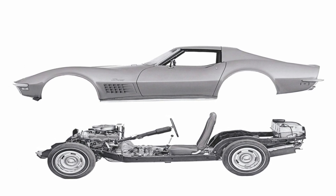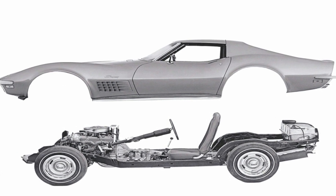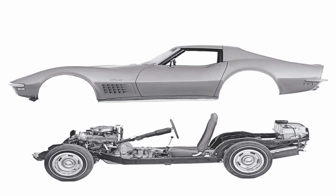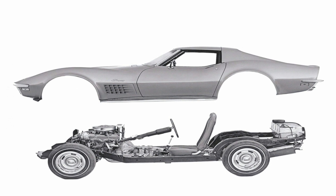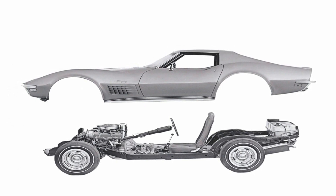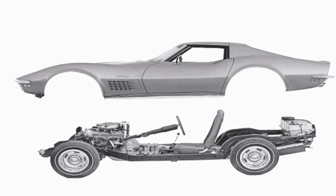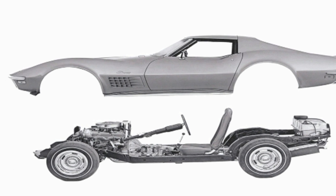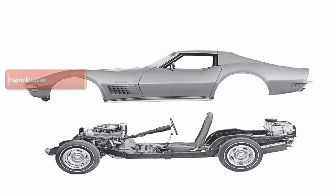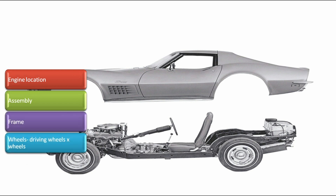In simple words, an automobile chassis is a complete vehicle without a body — it is just like a complete human without dress. One should not get confused with frame and chassis: frame is like a human skeleton, whereas chassis is a human without dress. Chassis can be classified based on engine location, assembly, frame, and wheels.